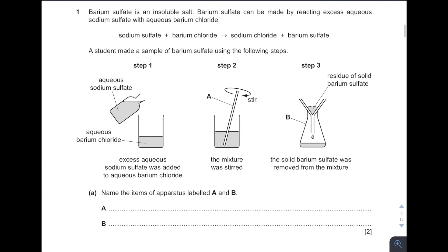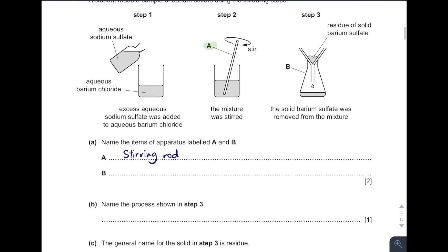Here you see, naming soft apparatus. So the one label A over here it is stirring rod. Or you can also write grass rod. So B is conical flask.